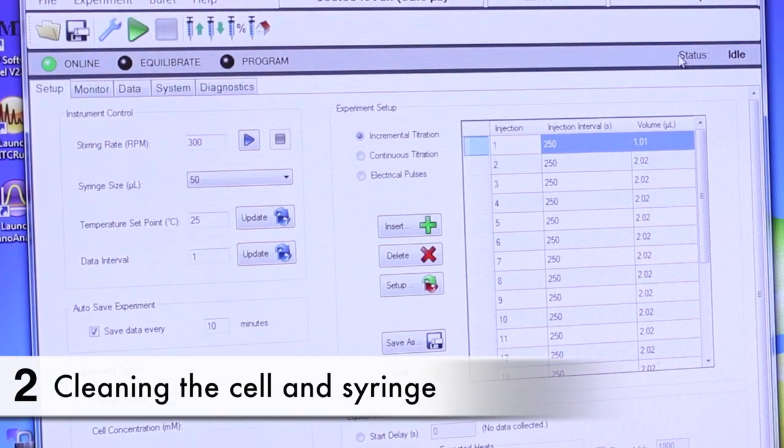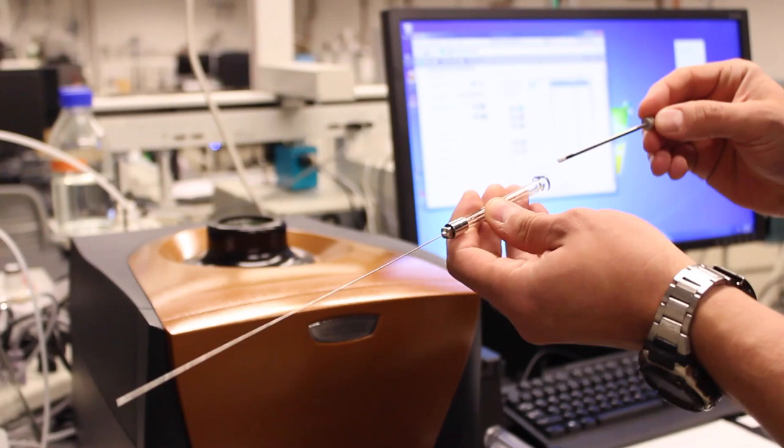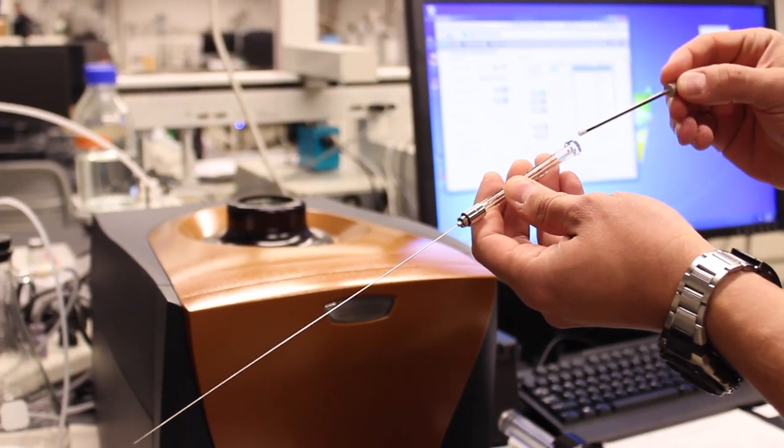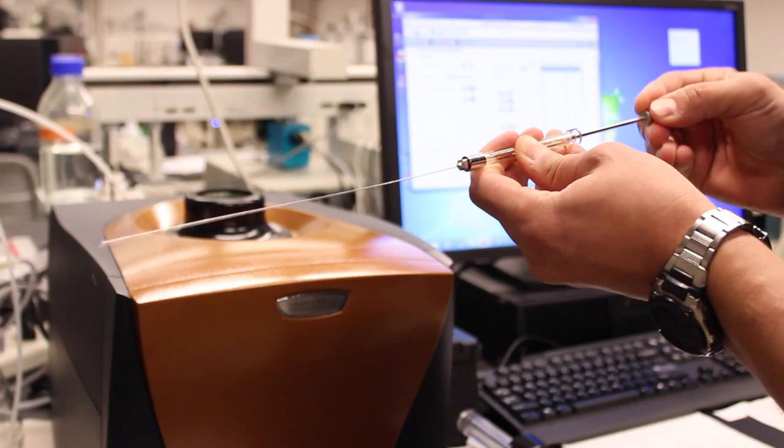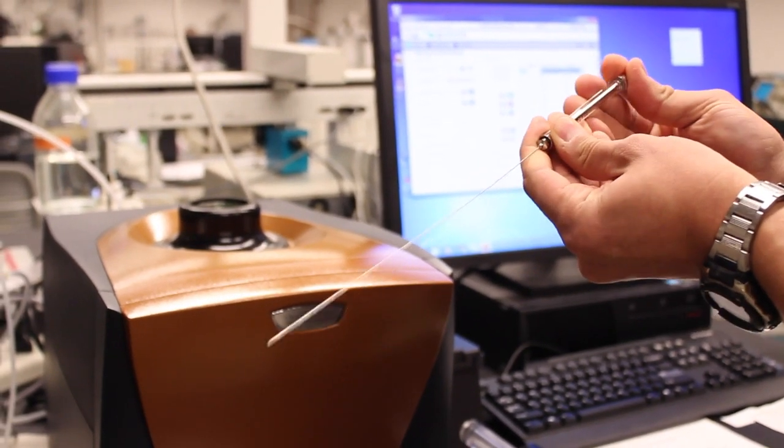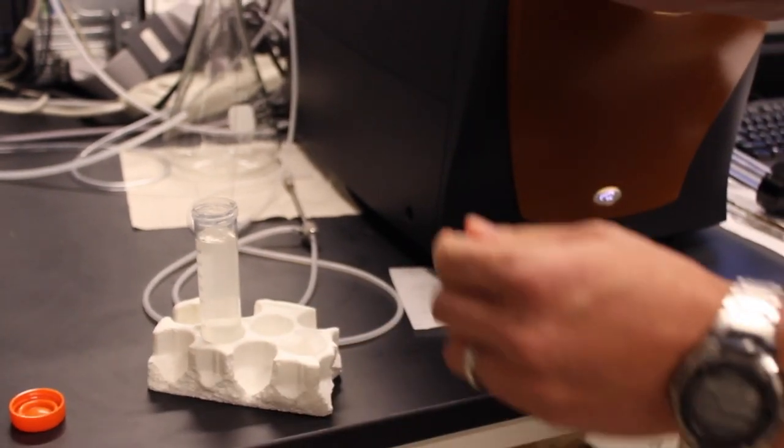To clean the cell, we're going to go back and remove the burette again. There's a number of ways that you can clean the cell. If the cell is already relatively clean, you can use a half mil syringe like this with a long needle and you can suck up some solution.